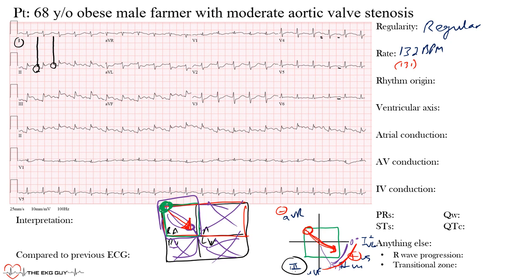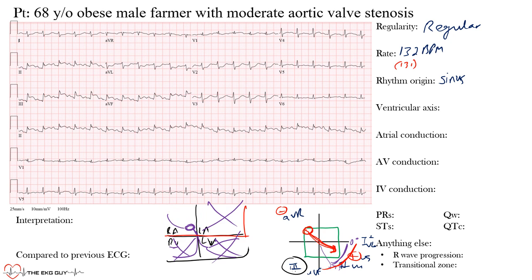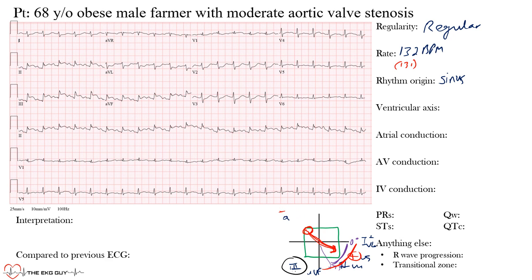Understanding why we look for those criteria — not just upright P waves in lead II, which often works, but understanding the underlying reason — is important. So far: regular rhythm, rate of about 130 beats per minute — a fast rate — and sinus origin. Now let's move on to the ventricular axis.